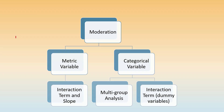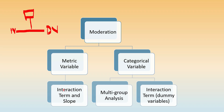We define a moderator as a third variable that affects the strength or direction of the relationship between an IV and a DV. In the previous video we discussed continuous variables, where the procedure was simple: we created an interaction term, checked if it was significant, and then performed slope analysis to see the effect of the moderator on the relationship.